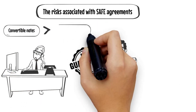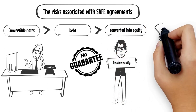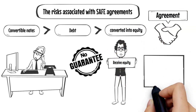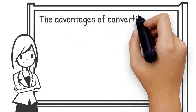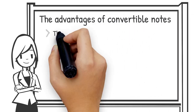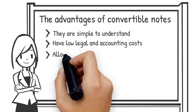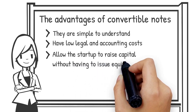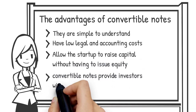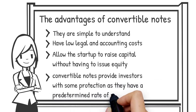Convertible notes are a form of debt that can be converted into equity at a later date. This type of agreement is often used by startups to raise capital without having to issue traditional securities. The advantages of convertible notes include the fact that they are simple to understand, have low legal and accounting costs, and allow the startup to raise capital without having to issue equity. Additionally, convertible notes provide investors with some protection as they have a predetermined rate of return.